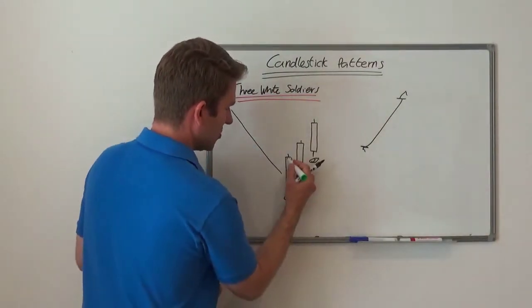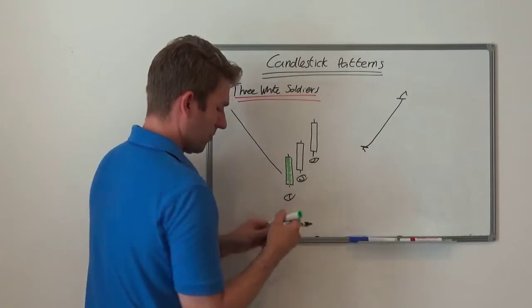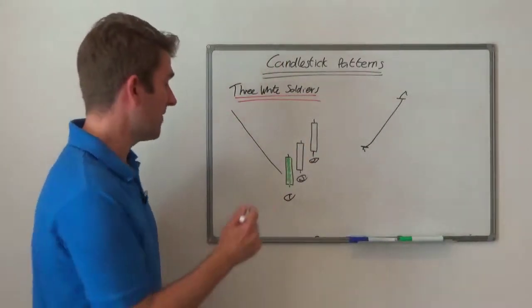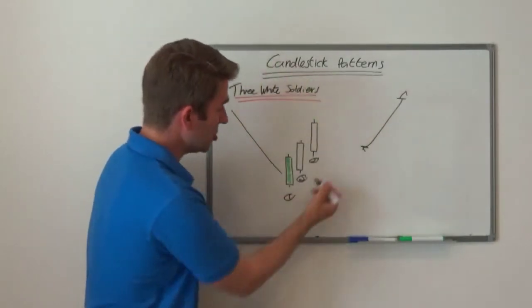If you're using a different charting package, it's going to be white. The point is it's high to low, close is above the open. That's the key factor to that. Now additionally, what you need to see in candles two and candles three are these things.